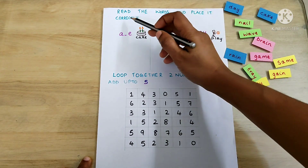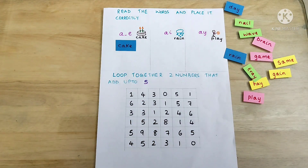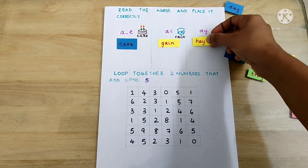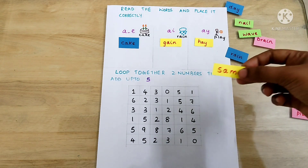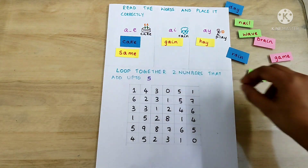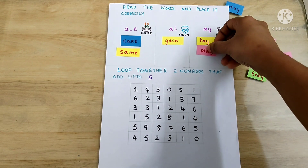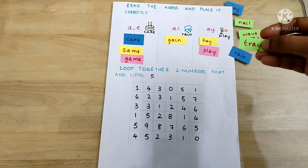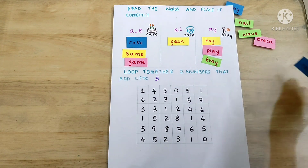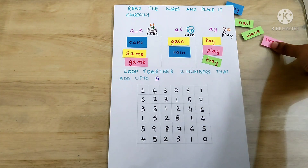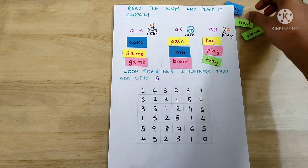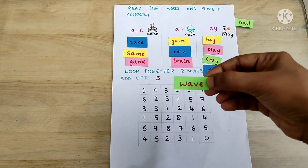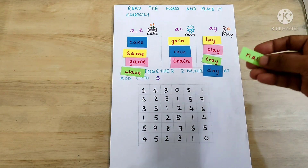Read the words and place them correctly. Cake — it's an 'ae' word. Gain — it's an 'ai' word, place here. He — 'ae' word. Same, Play, Game, Tray, Rain, Brain, Day, Wave, Nail.